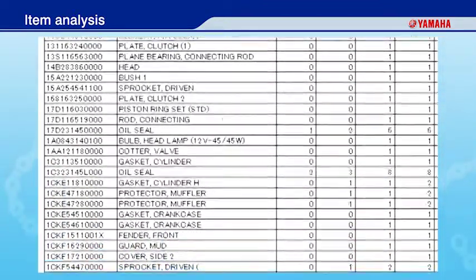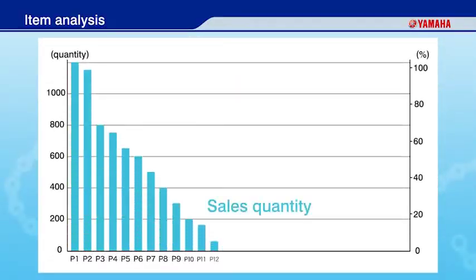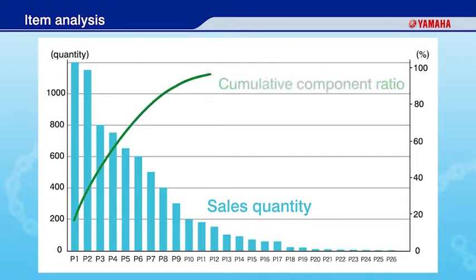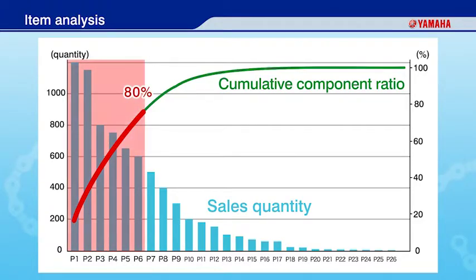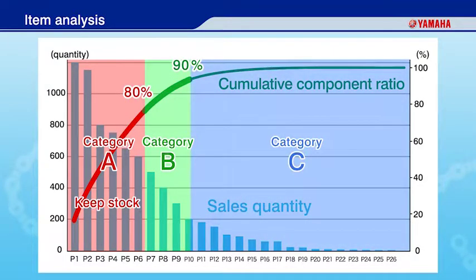Make these calculations using the actual demand quantity. First, graph the sales volume of each part. Next, graph the cumulative component ratio. Set everything with a cumulative component ratio of 80% or below as Category A. Set the area between 81% and 90% as Category B. Set the rest as Category C. You should stock parts in Category A, which account for 80% of sales at your shop. Performing an ABC analysis can help you determine which items need to be stocked.